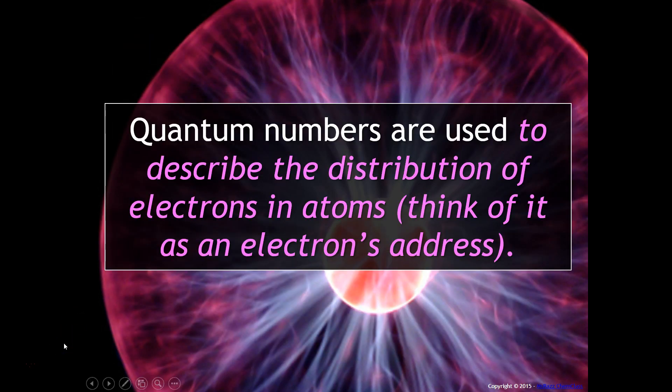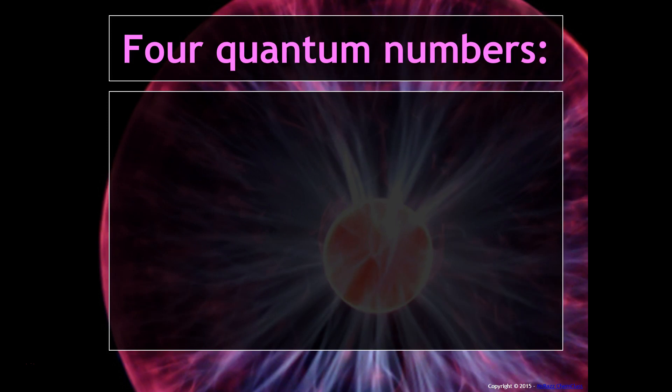Quantum numbers are similar to your address in that you can think of it as an electron's address. It is a way that we assign numbers to indicate where the electron is located. There are four quantum numbers.